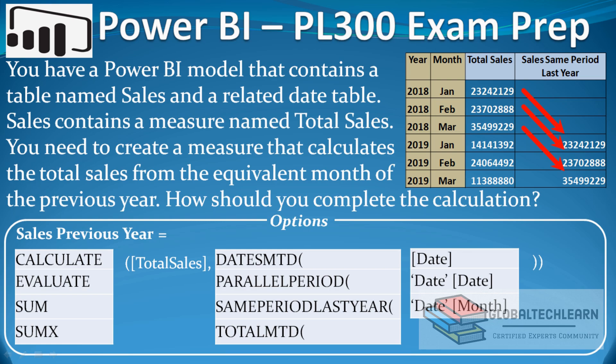Let's understand the question. In the model we have the Sales table and the Date table, so we need to make sure we have a Date table along with Sales in our model. In the Sales table we have a measure for Total Sales. We will need to create a measure, and then the third requirement is that we have a measure that calculates the total sales from the equivalent month of the previous year.